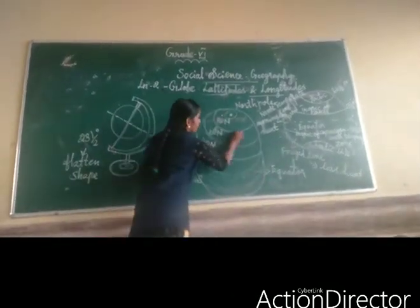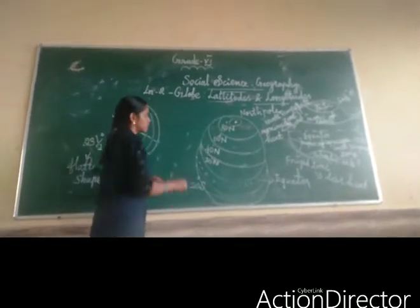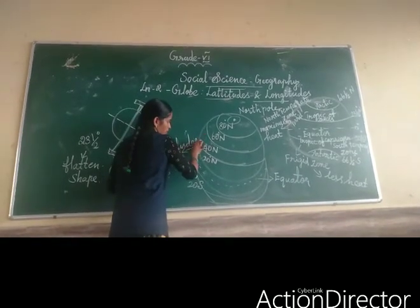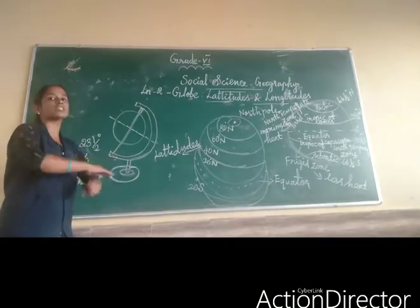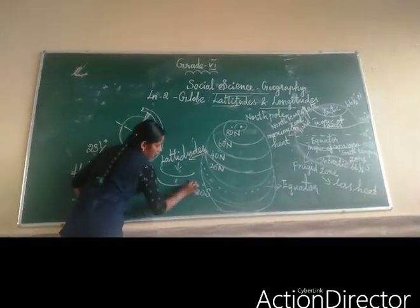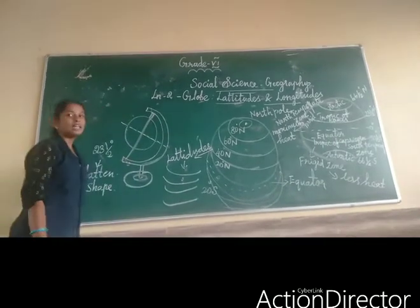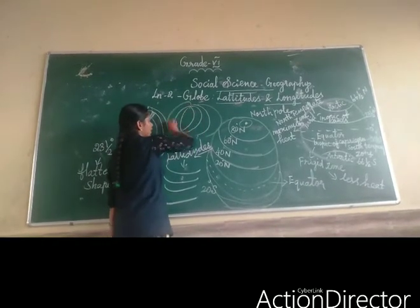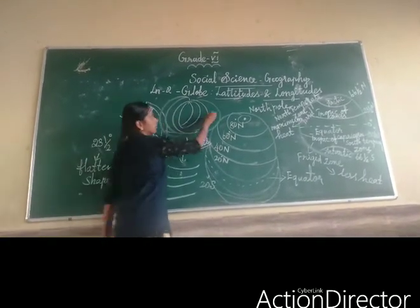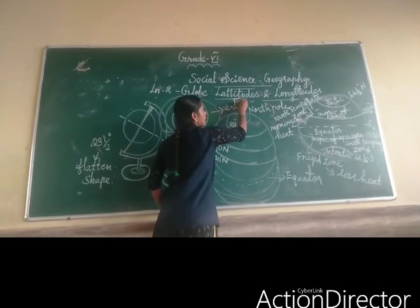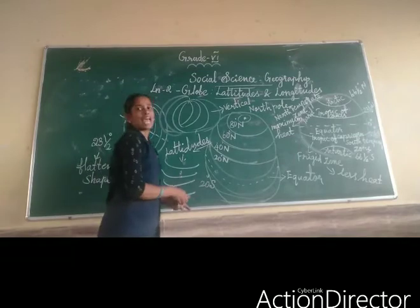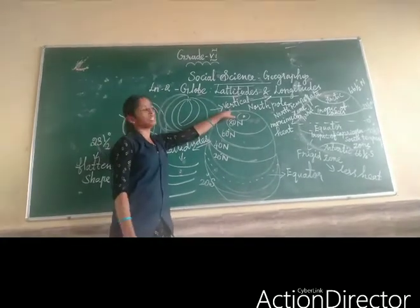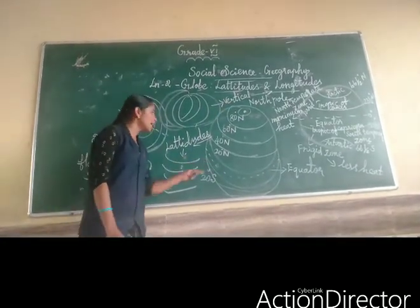For these lines, what we call latitudes. When a line is horizontal, it is called a latitude. When a line is vertical, it is called a longitude. So, latitudes means everything in the horizontal lines, and longitudes means everything in the vertical lines.